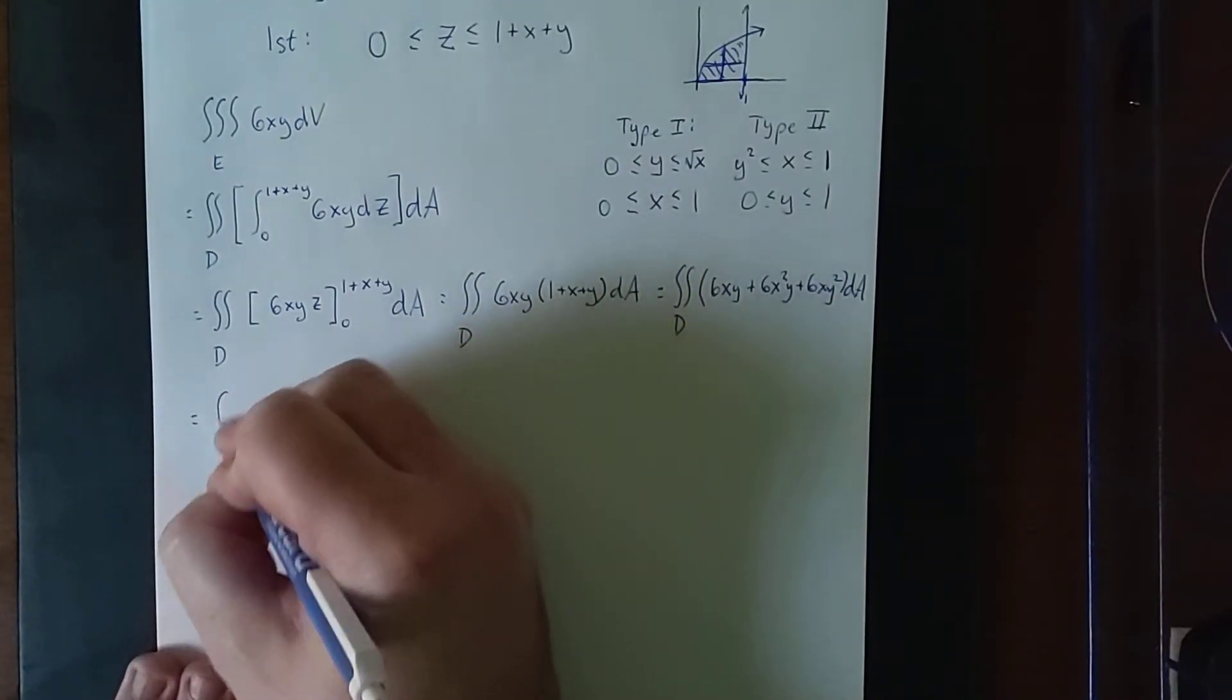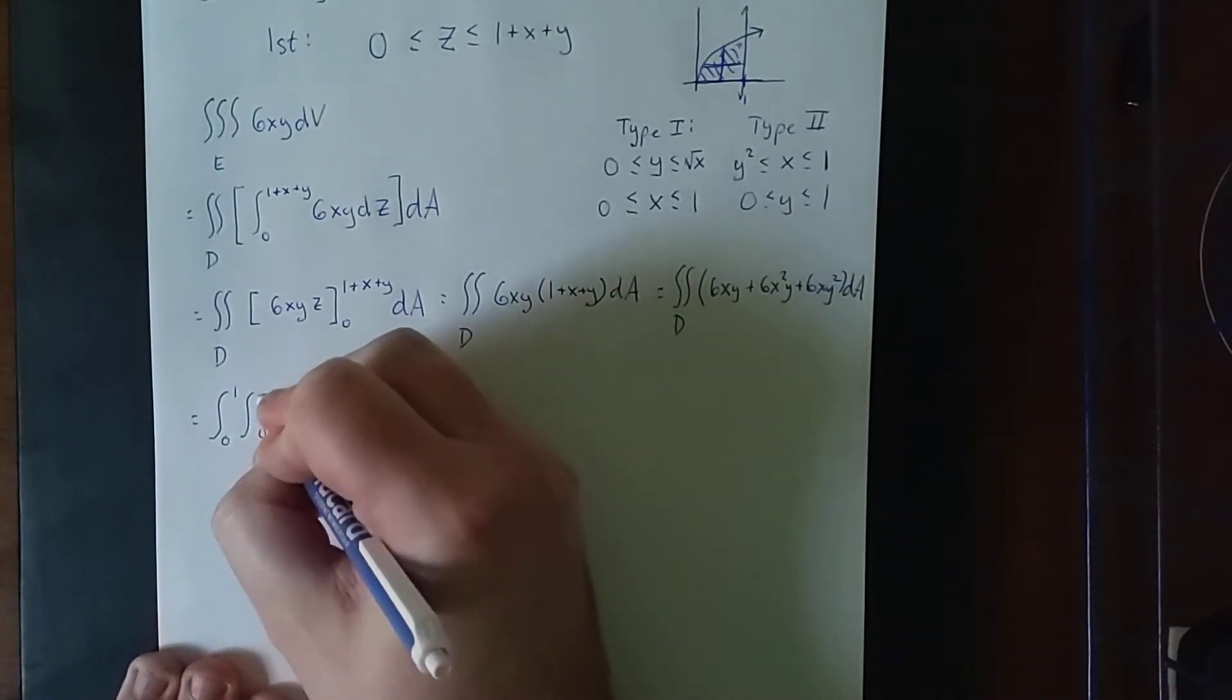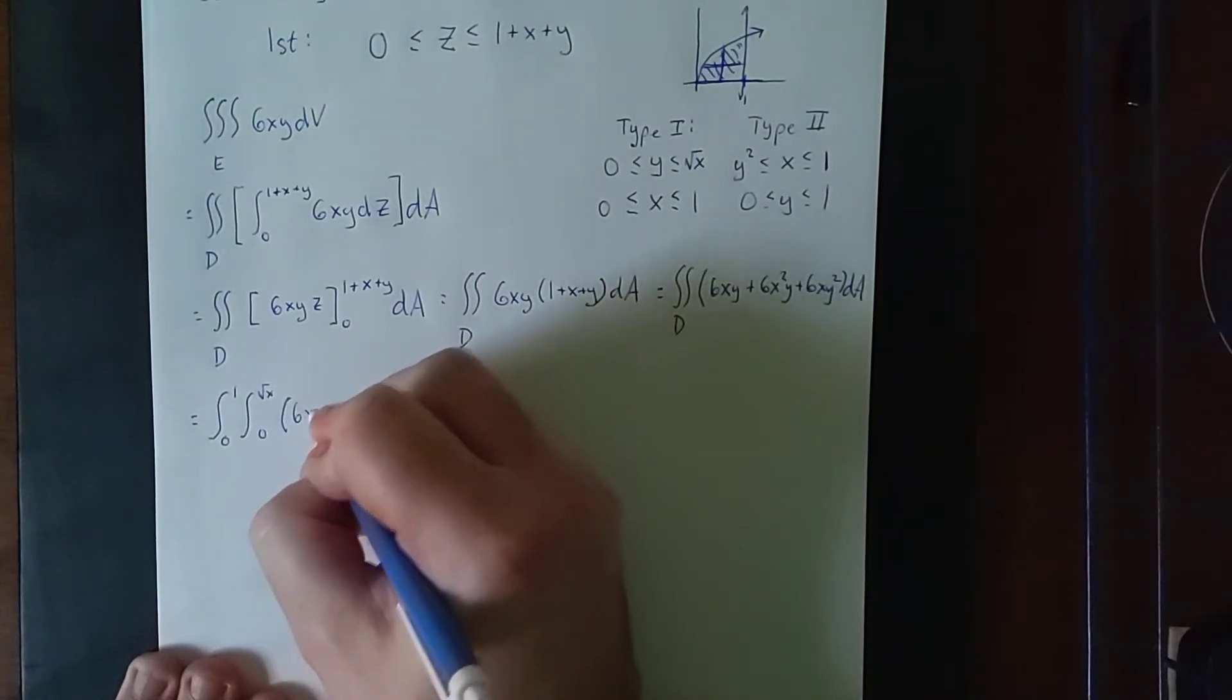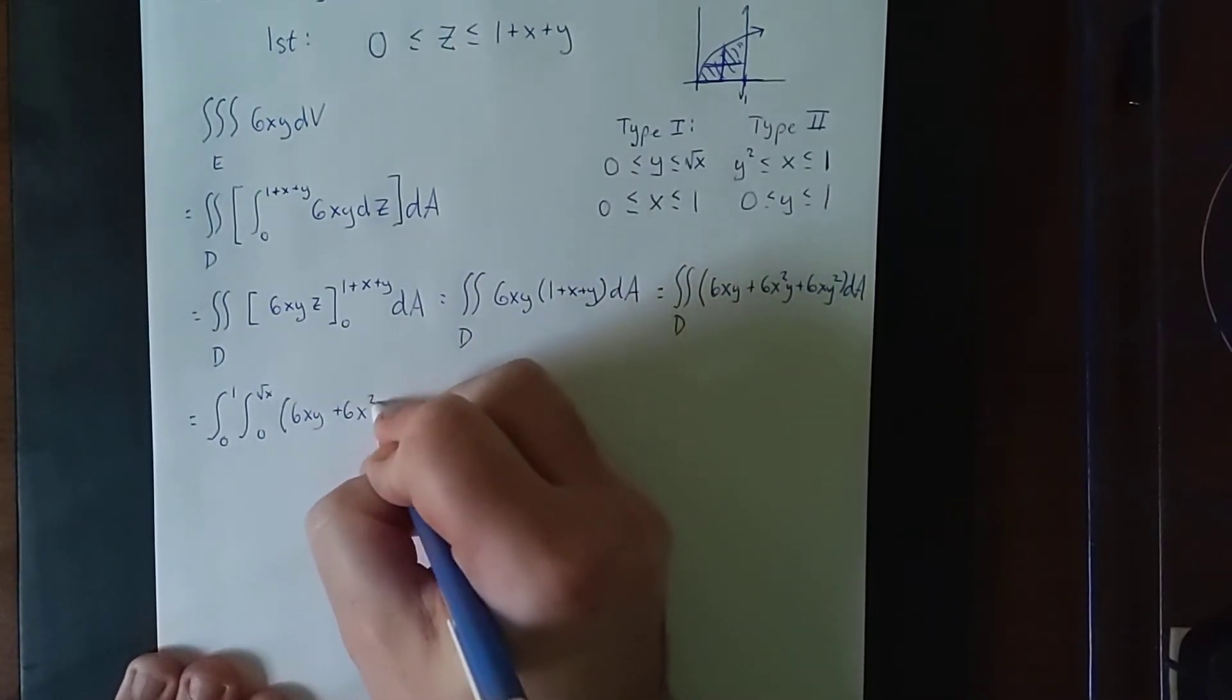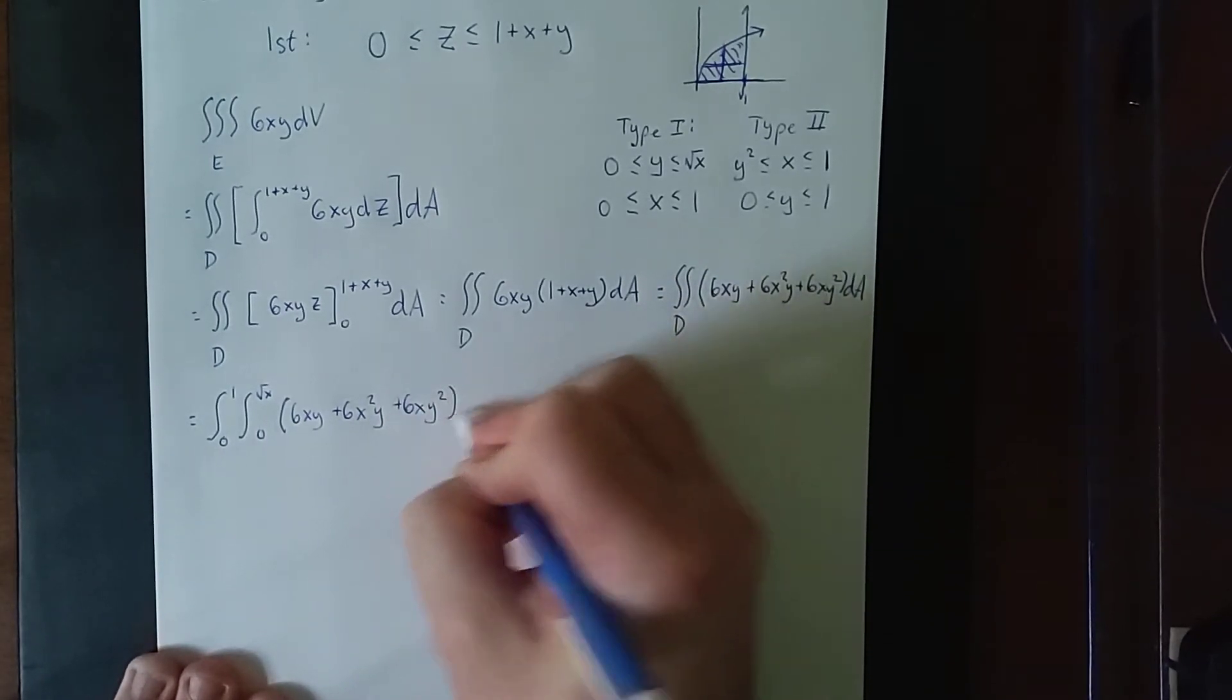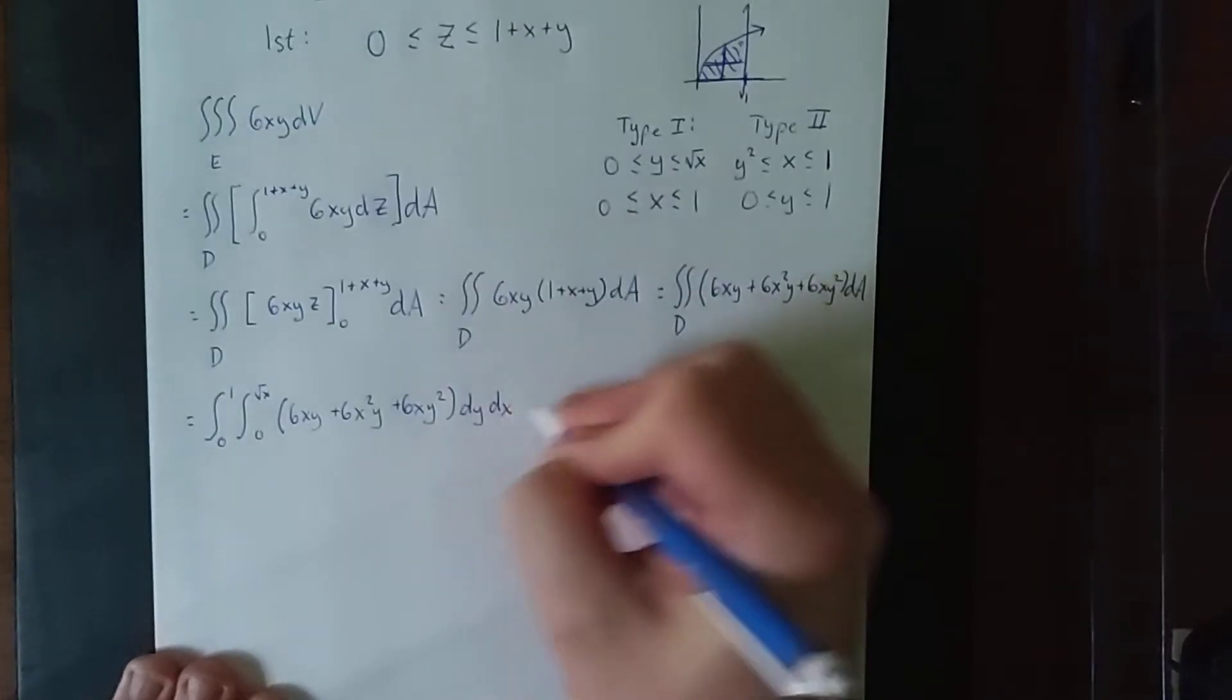So setting this up in terms of a type 1, we'll go 0 to 1, and 0 to the square root of x of 6xy plus 6x squared y plus 6xy squared. First integral will be with respect to y. Second one will be with respect to x.